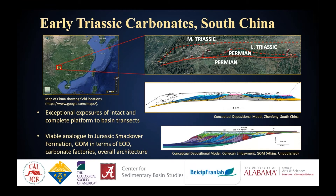These Triassic carbonates also serve as an excellent analog to the Smackover formation, having similar carbonate factories, environment of deposition, and overall architecture. The two conceptual depositional models shown are from the Triassic carbonates of South China and the Conecuh Embayment from the Gulf of Mexico. What I want to highlight is the similarity in overall architecture — the prograding clinoforms and the carbonate factories — where in dark we have the microbialites, and in light blue we have the shallow-water oolites, which are also observed in the Smackover formation.